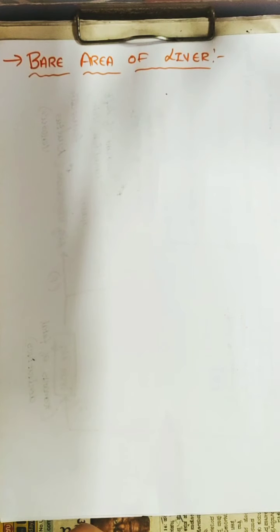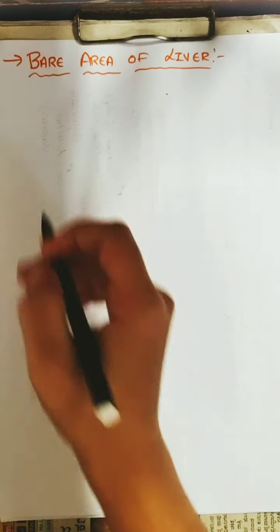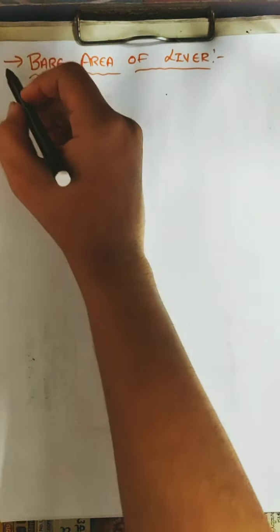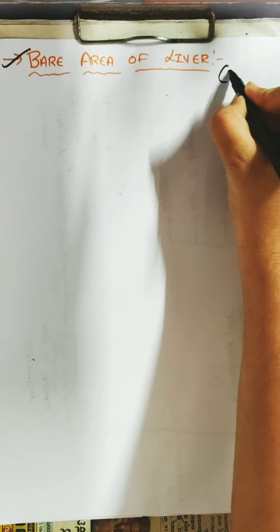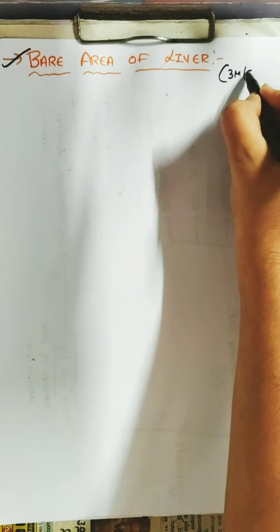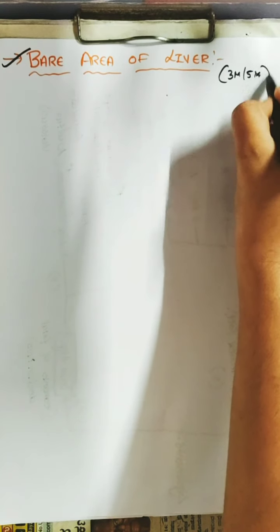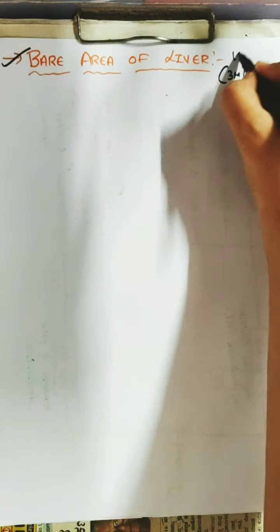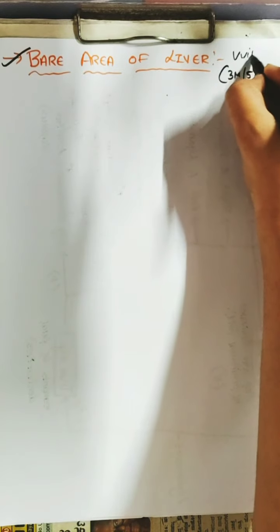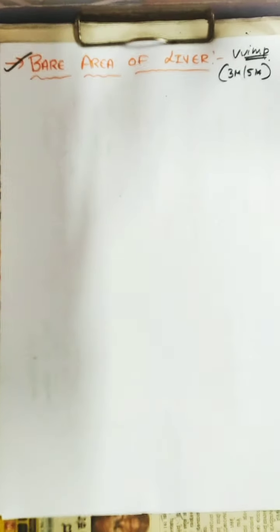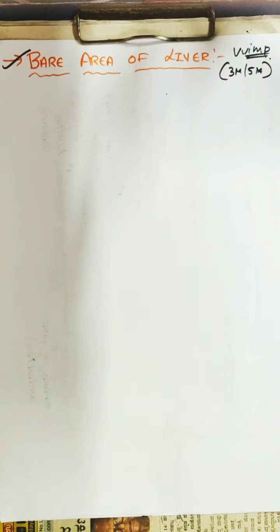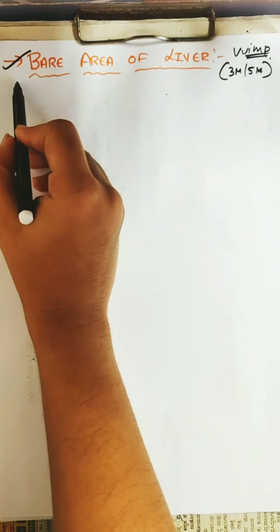This is the explanation about the bare area of the liver — a very important topic. It usually asks for three marks or five marks. Very very important topic: bare area of the liver.